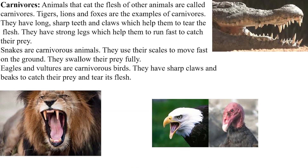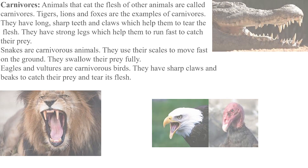Carnivorous animals like lions, tigers, and wolves eat flesh, so they have long sharp teeth and claws to tear flesh, and strong legs to run fast and catch their prey. Snakes use their scales to move fast and have special fangs to catch prey, and some snakes swallow their prey whole. Carnivorous birds like eagles and vultures have sharp claws and beaks to catch prey and tear flesh.